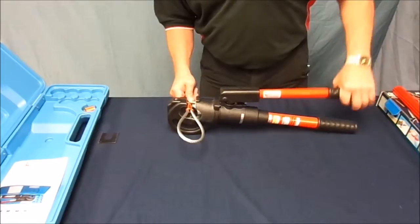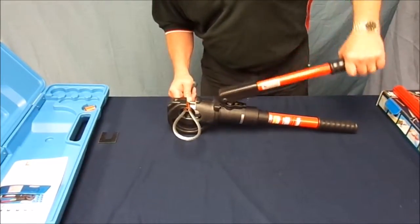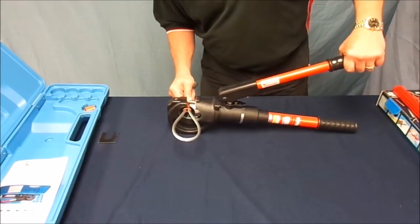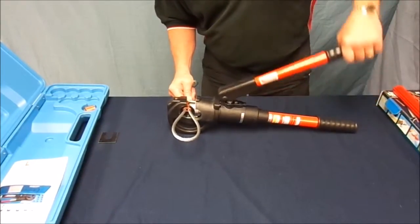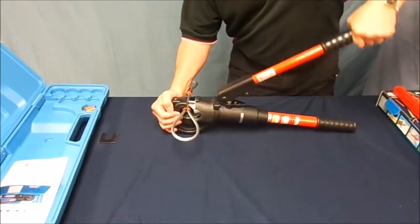Since this is a 5-16th cable, the enclosed instructions dictate that two compressions need to be made to complete this attachment. Continue by making the next compression as described previously. Space the swage evenly over the length of the fitting, working your way towards the loop.